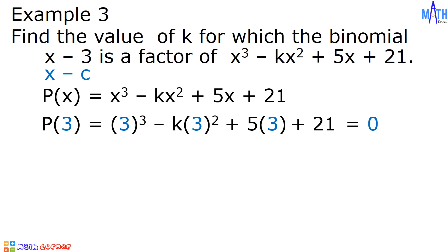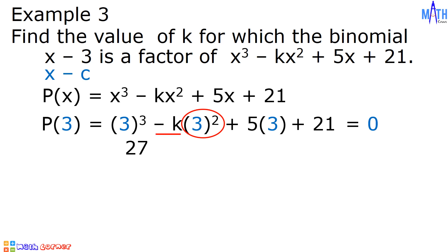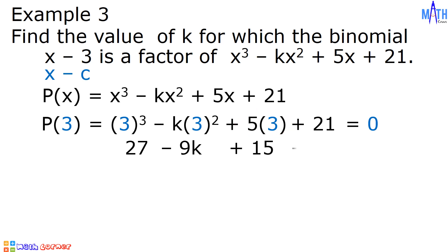Let us simplify. 3 cubed, or 3 times 3 times 3, is equal to 27. Next, 3 squared, or 3 times 3, is equal to 9. 9 times negative k is equal to negative 9k. Next, 5 times 3 is equal to 15, plus 21, equals 0.